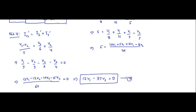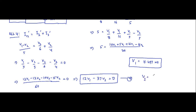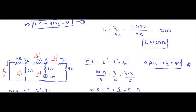We solve equations 3 and 4 using the variable cancellation method or a calculator in equation mode. We get V1 equals 15.497 volts and V2 equals 5.026 volts.